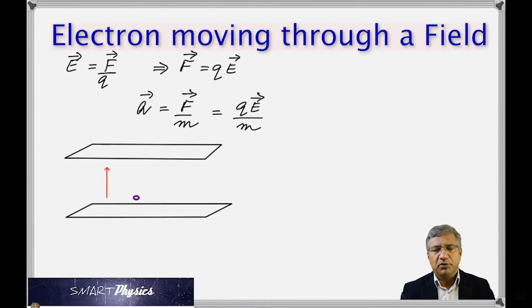So now suppose there is an electron right here that is already moving with a certain velocity, so it has an initial velocity along that direction. Let's call it V-naught. So because of the electric field, is the electron going to be accelerated or will it be decelerated?